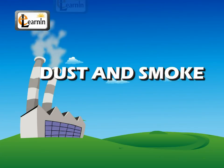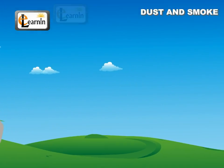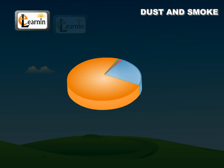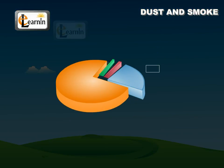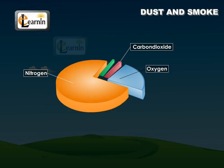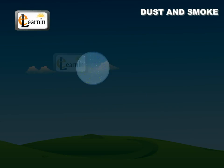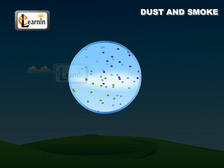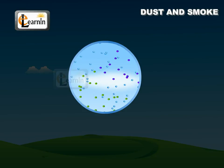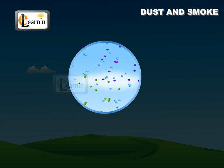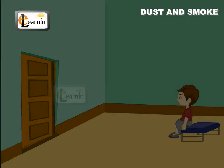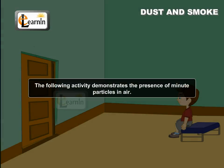Air is a mixture of several gases like oxygen, nitrogen, carbon dioxide, and inert gases. Air also contains minute particles of dust and smoke. The following activity demonstrates the presence of these minute particles in air.